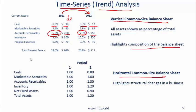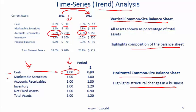Now let's look at the horizontal common-sized balance sheet at the bottom. This highlights structural changes in a business. With a horizontal common-sized balance sheet, we take each balance sheet item and in the base year set the item equal to 1. Cash was set to 1 in period 1, then in period 2 cash came down by 20% to 0.8. Marketable securities stayed the same. Accounts receivable went up by 30%. On the liability and equity side, you can see how debt and equity are changing relative to the original period.